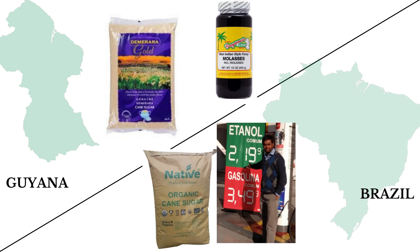At the end of the cultivation and harvesting period, Guyana mainly produces sugar and to a lesser extent molasses. It is the largest producer of sugar in the Caribbean. Brazil mainly produces ethanol and sugar, but also produces bioplastics and biochemicals. It is in fact the second largest producer of ethanol in the world behind the USA and the largest producer of sugar.